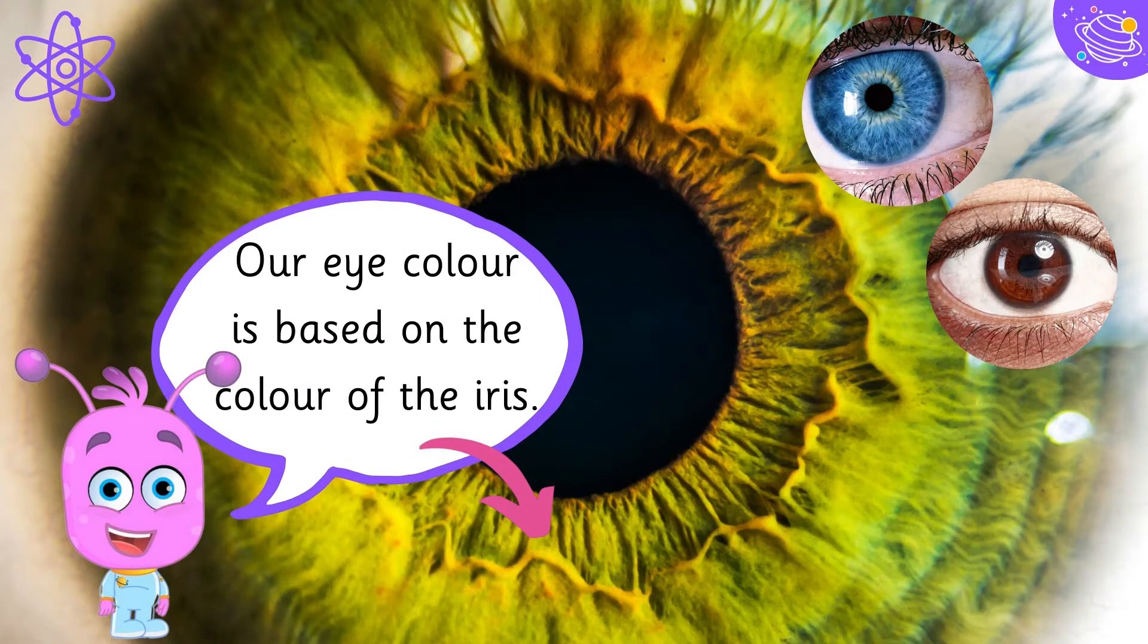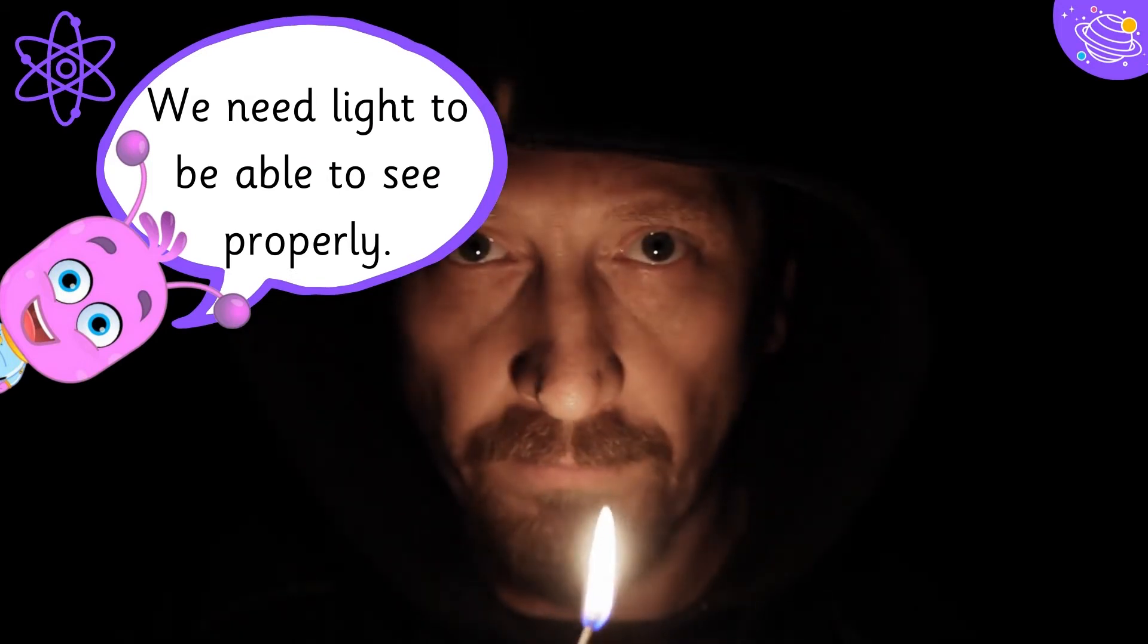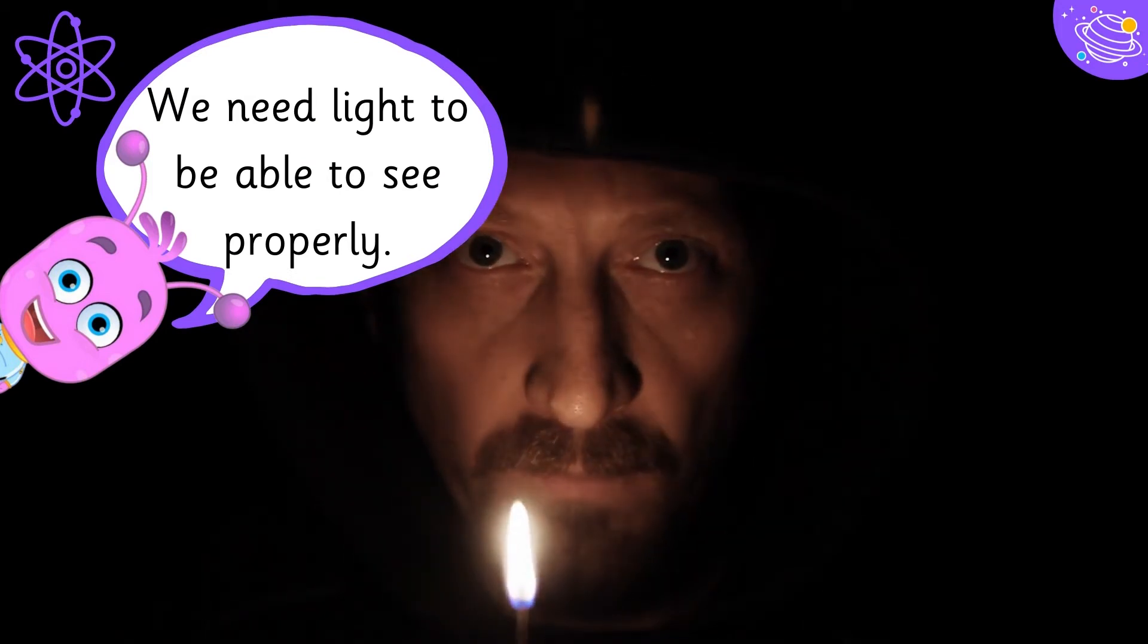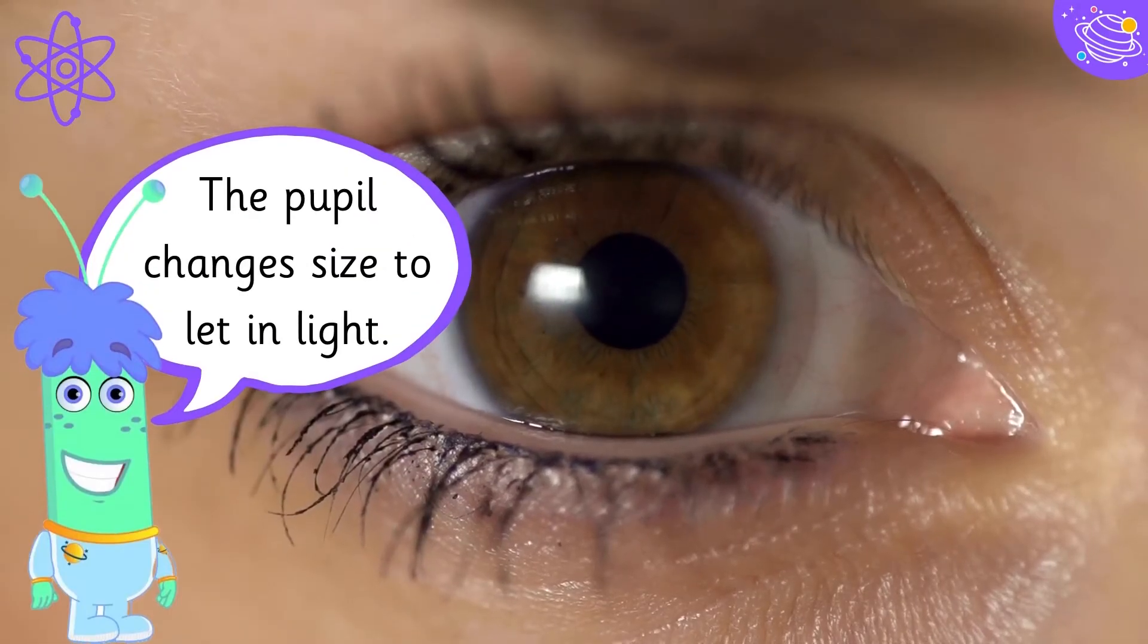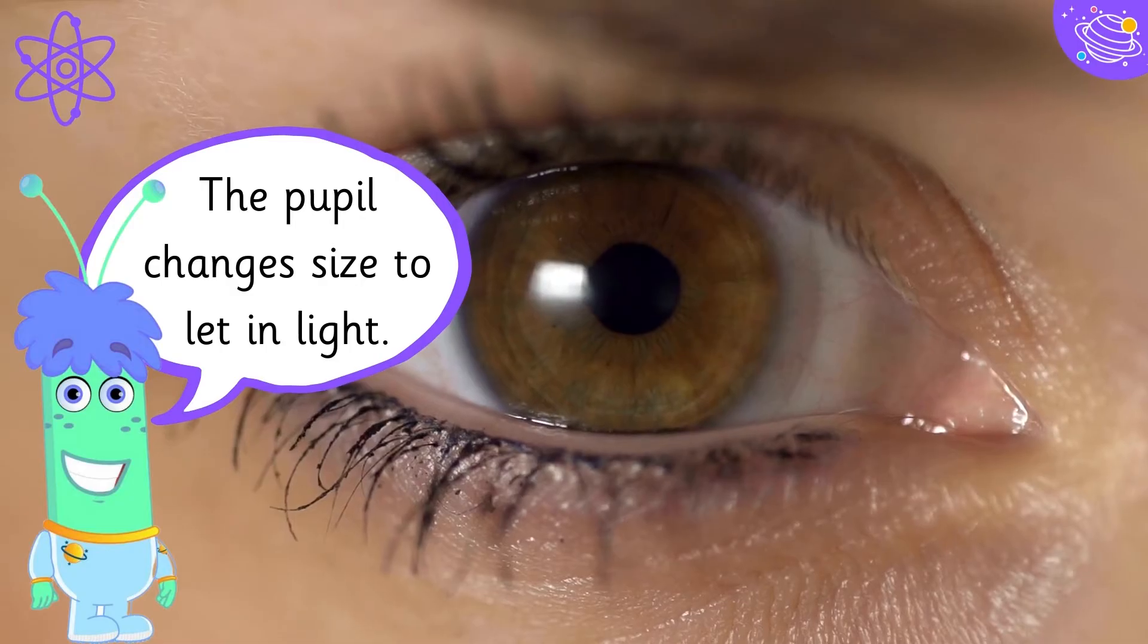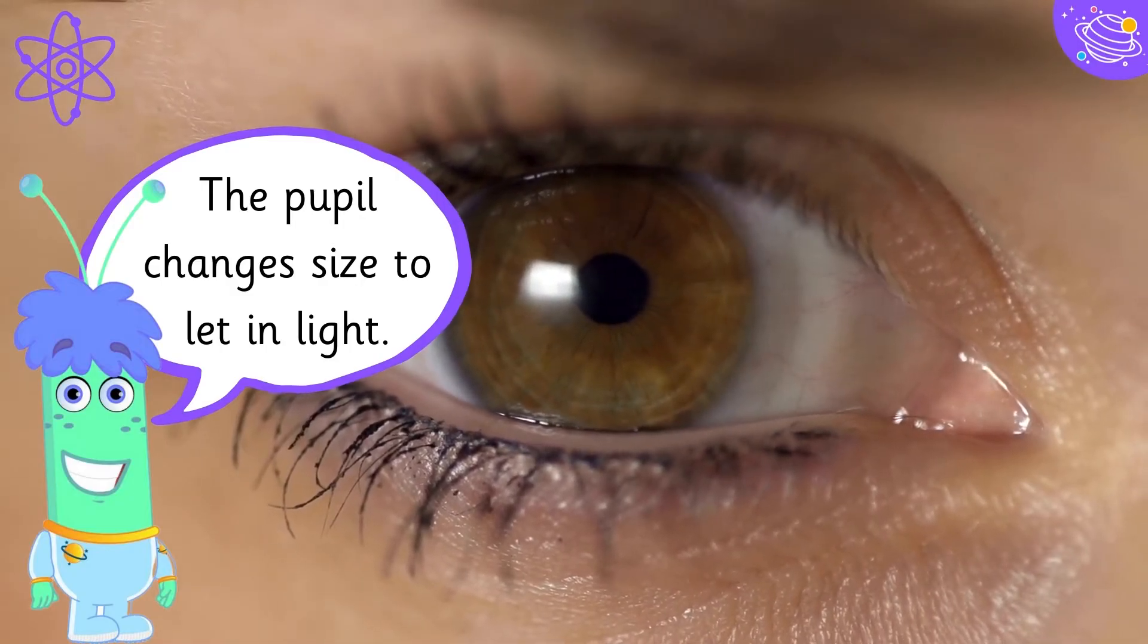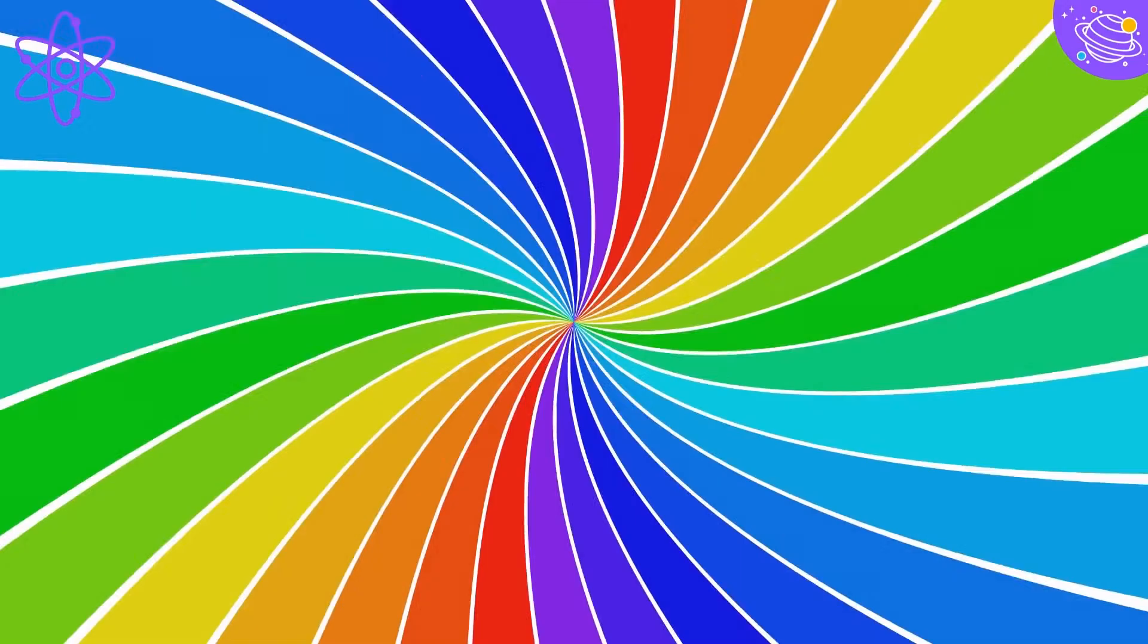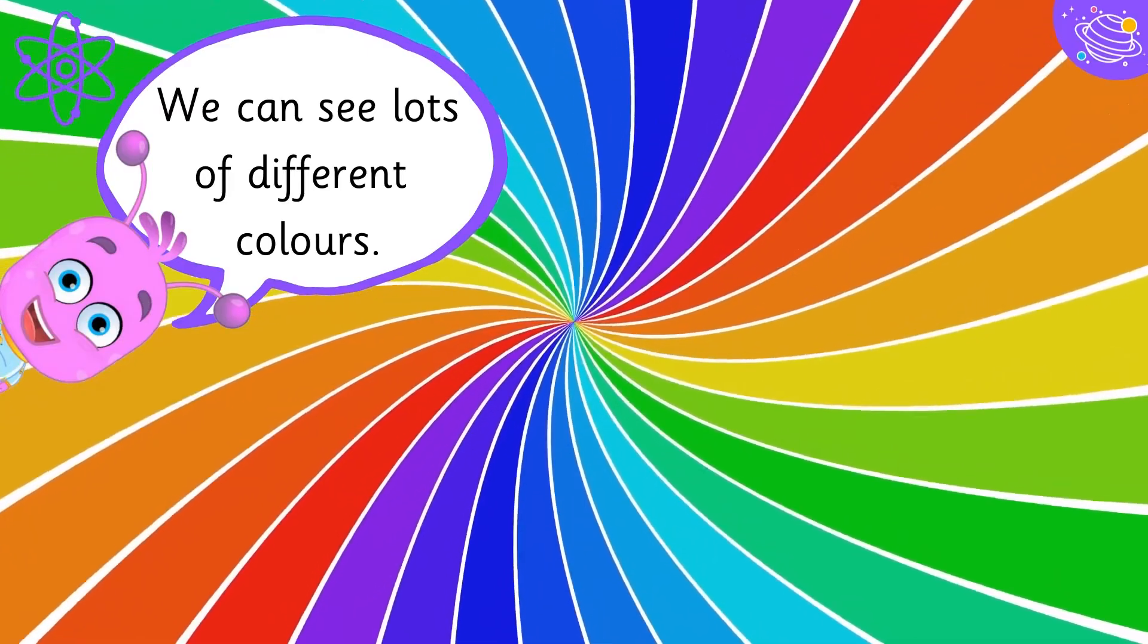Our eye color is based on the color of the iris. We need light to be able to see properly. The pupil changes size to let in light. We can see lots of different colors.